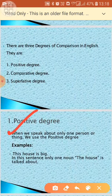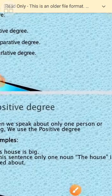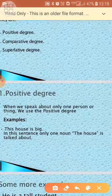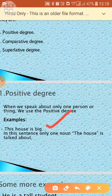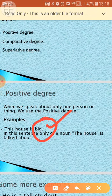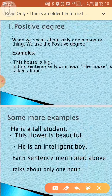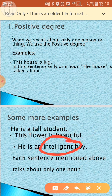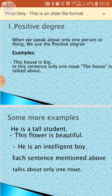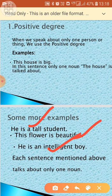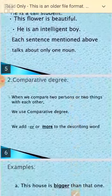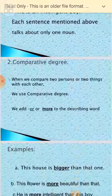Now let's read about Positive degree. Positive degree is used when we speak about only one person or thing and describe its qualities. For example: 'The house is big,' 'He is a tall student,' 'The flower is beautiful,' 'He is an intelligent boy.' In all these sentences, only one noun is being described, so we use Positive degree.